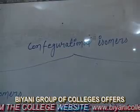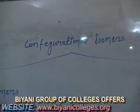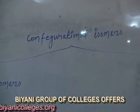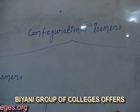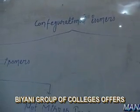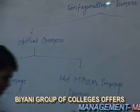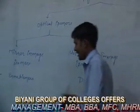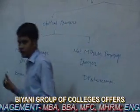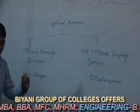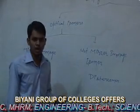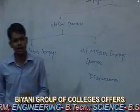The configurational isomers are basically classified in two categories: first, optical isomers and second, geometric isomers. Optical isomers, based on the property of mirror images, are classified in two categories: first, mirror image isomers and second, non-mirror image isomers.